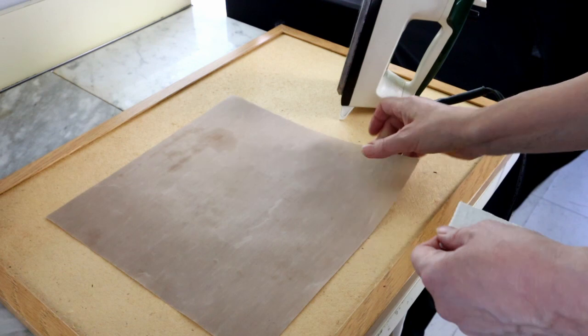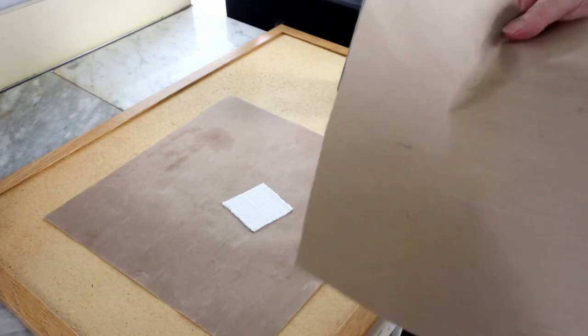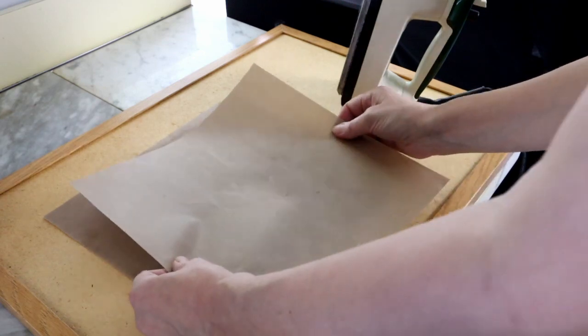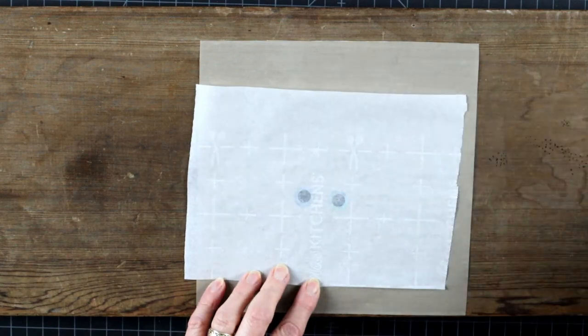And speaking of liners, those are crucial so the plastic doesn't stick to your iron or your ironing surface. It can be a teflon sheet or parchment paper will work.